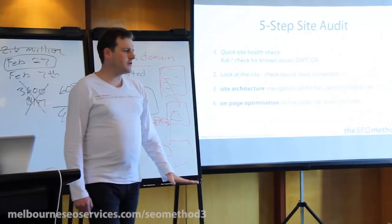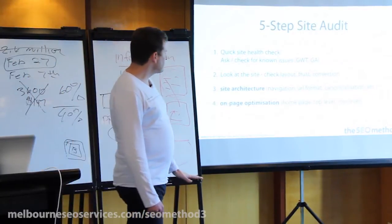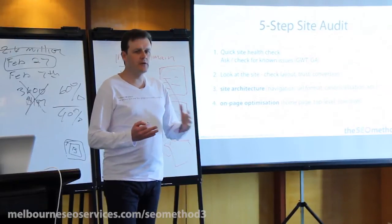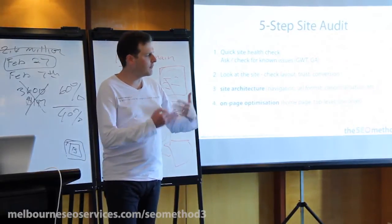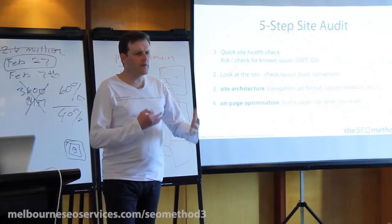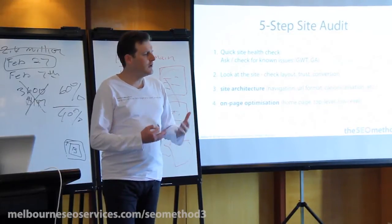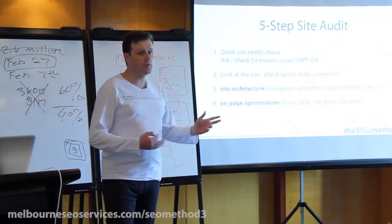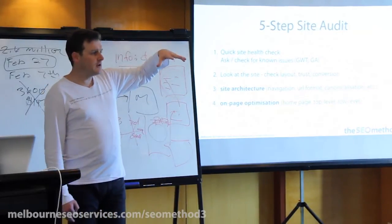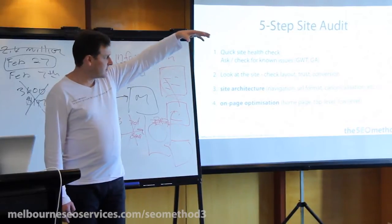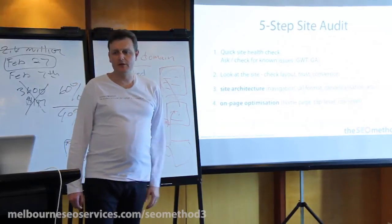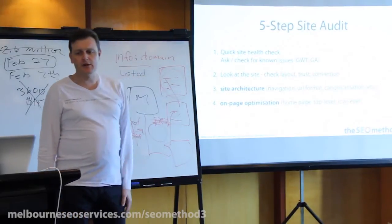Then we zoom down and look at the on-page optimization — how they're currently doing their keyword optimization and on-page optimization on the site. We want to get a feel for what this looks like. We're not going to look at every single page; we just take a few. I generally take the home page, a top-level category page, and a low-level content page or product page in an e-commerce store.